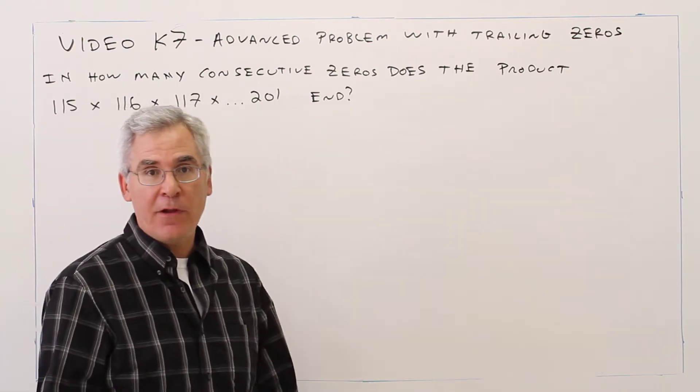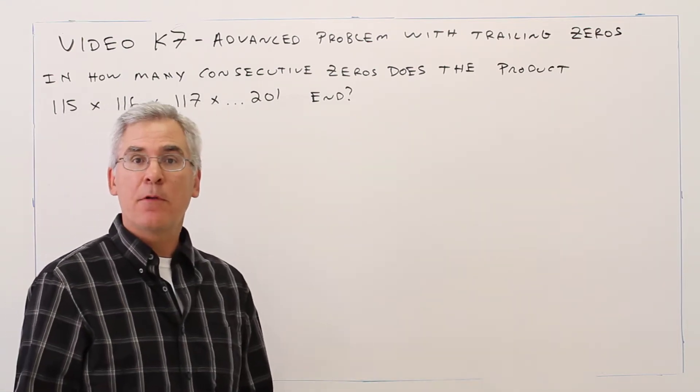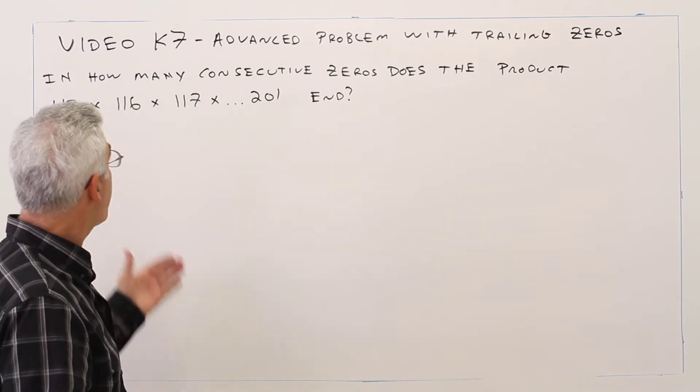Welcome to video K7, an advanced problem with trailing zeros. Here's the problem.